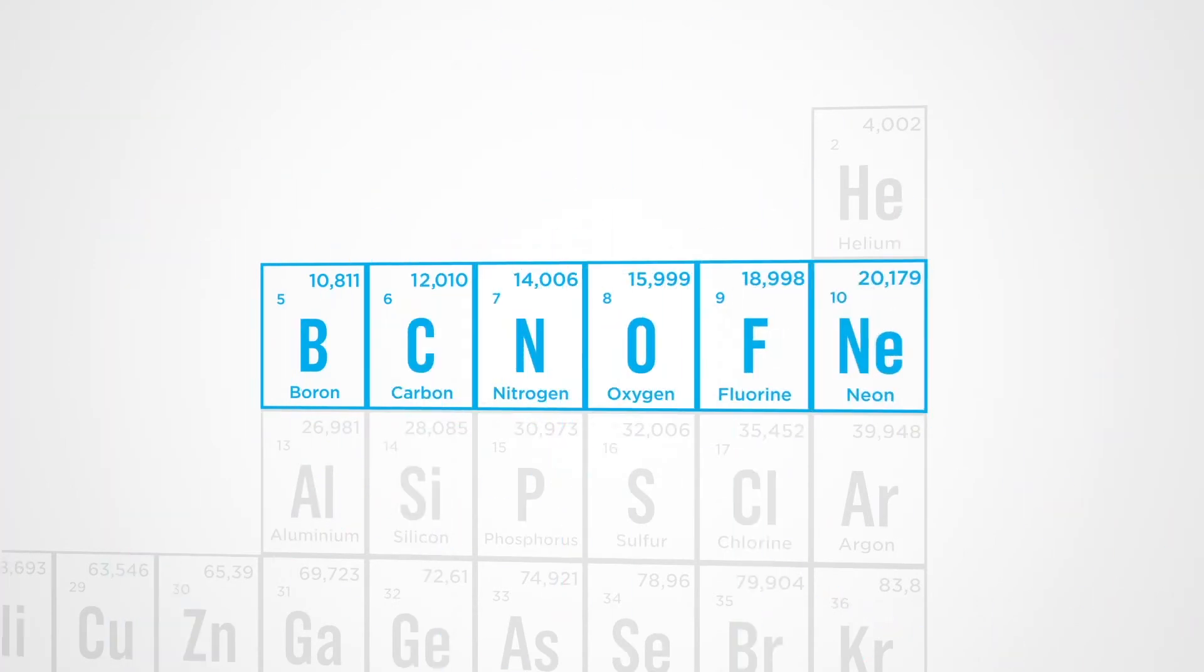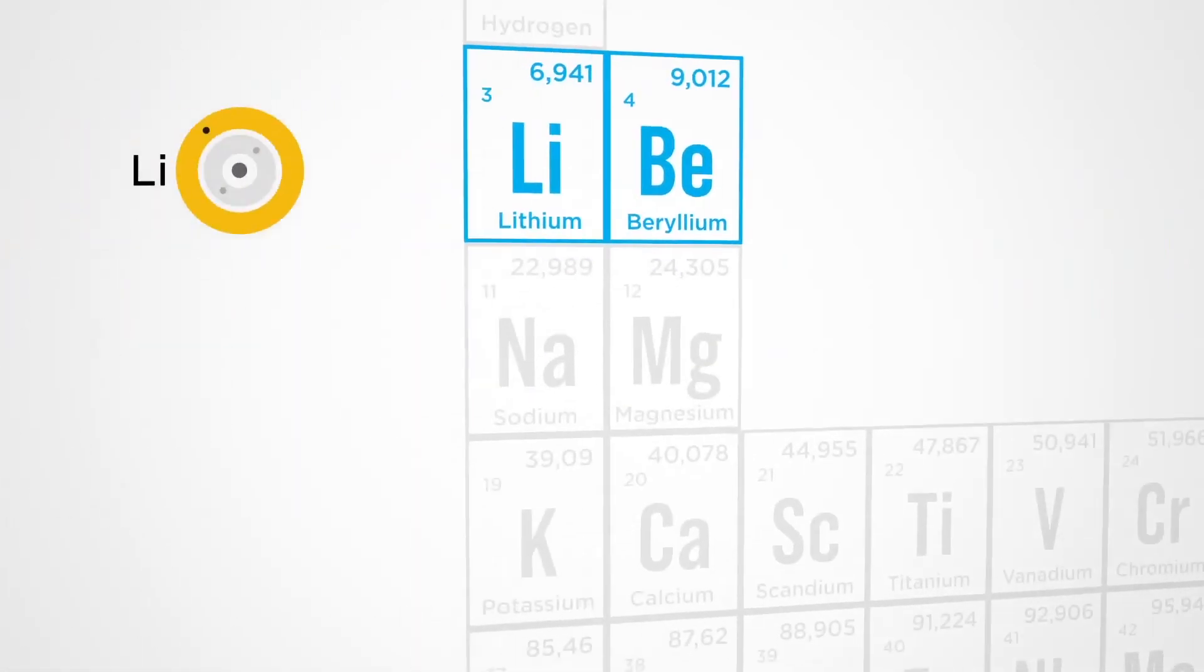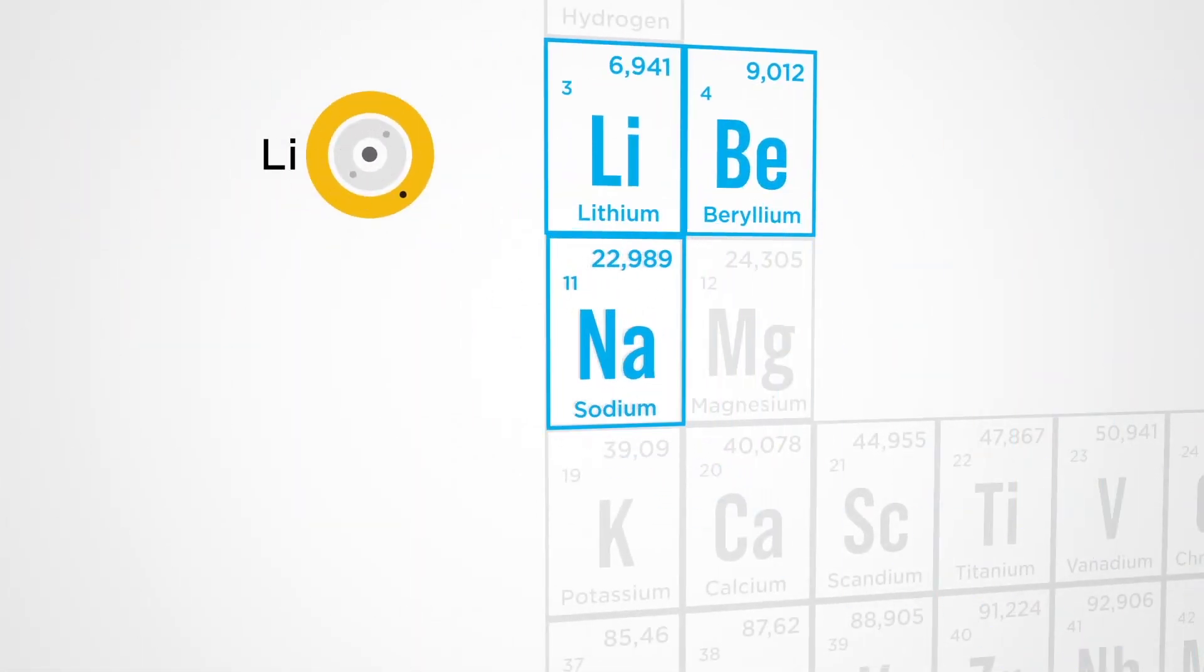Here the last layer of electrons gets full, and we move on to the next line and back to the first column. The properties of this element, 11 (sodium), are again identical to the element that is directly above it, and so on.